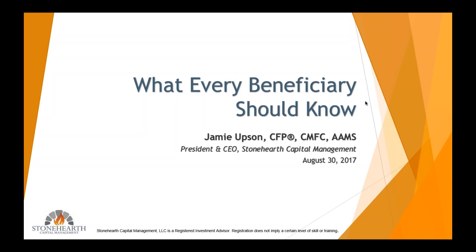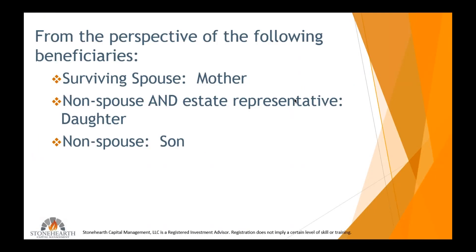So let's begin. I'm going to break this into three sections. I want to build this from the point of view of a real life example. So if we think of a mother and father, and they have two children — a son and daughter — let's pretend that they have named their daughter as their executor, or what they now call estate representative.